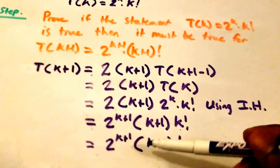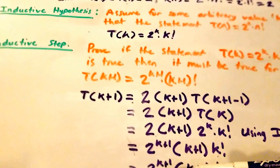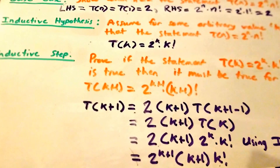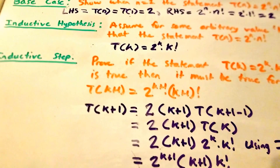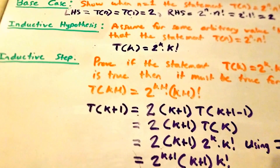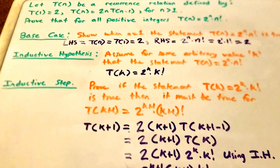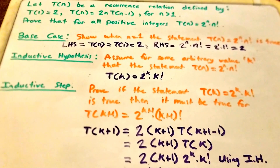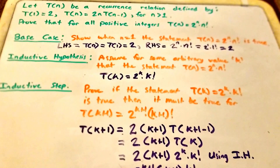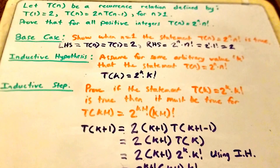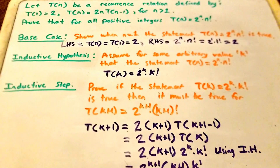Now that we have shown this is true for the next natural number, we have proven that T of n equals 2 to the power of n times n factorial for the recurrence relation T of n equals 2 times n times T of n minus 1. Thanks for watching — please leave questions in the comments, hit like, share if you found it helpful, and don't forget to subscribe.